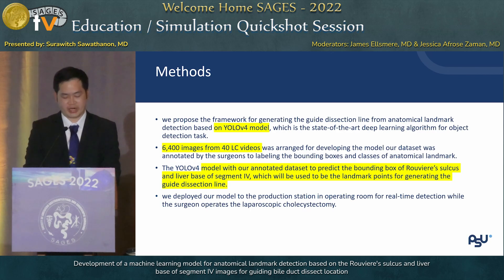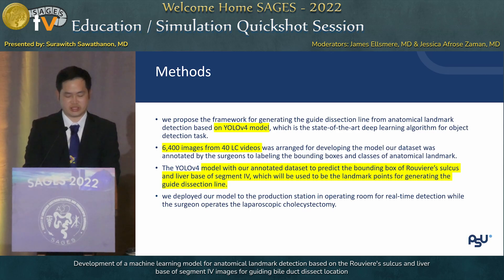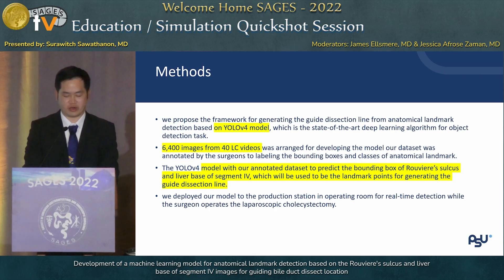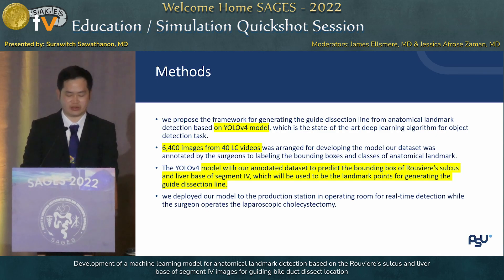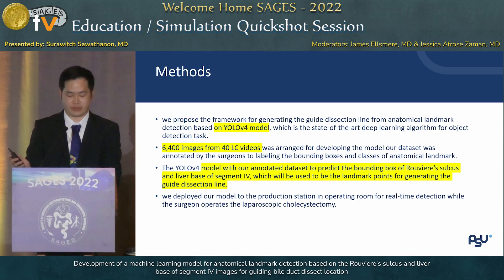We applied the YOLO V4 model for training. 6,400 images from 60 laparoscopic cholecystectomy videos were prepared for training the model. The landmarks were annotated by experienced surgeons, and finally we deployed our model in the operating room.